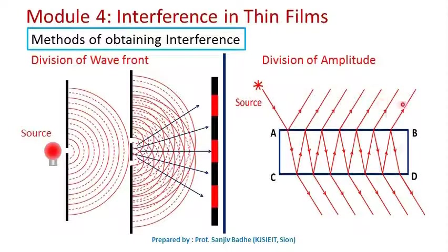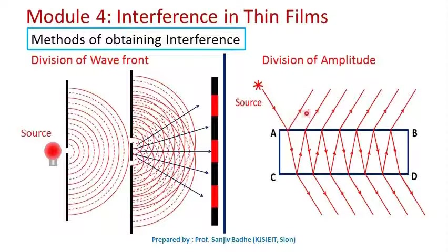In the division of amplitude method, a single light wave is divided into a number of light rays with the help of a thin film. For these light waves to interfere with each other, they must be close to each other. The light rays will be close to each other only if the thickness of the film is very small. We call a film a 'thin film' if its thickness is comparable to the wavelength of light — only then will the waves be close enough to interfere and produce an interference pattern. If the thickness of the film is very large, the reflected light waves will be far apart, there will be no superposition, and therefore no interference pattern will be produced.